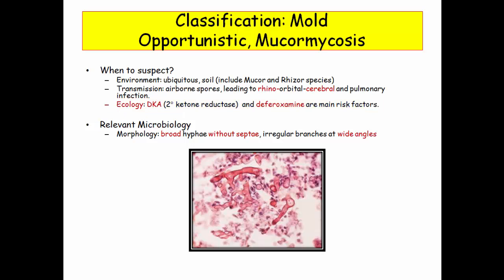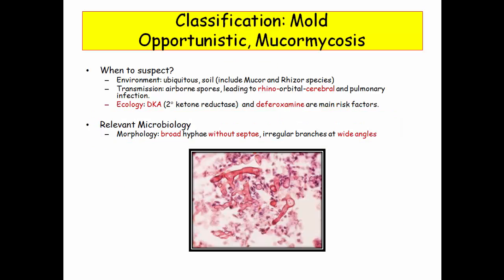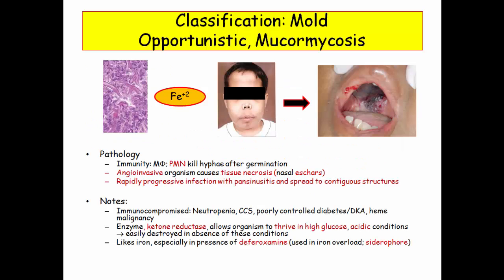The infection itself is characterized by rhinocerebral or rhinoorbital-cerebral infection. As for microbiology, here is the key compare and contrast: mucor is described by broad hyphae without septa and irregular branching at wide angles — broad, irregular, and wide. That is a very different description than aspergillus. From the pathologic perspective, PMNs are important as they are with all hyphae, so neutropenia will further predispose to infection.